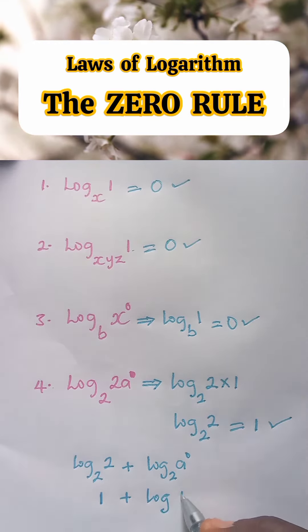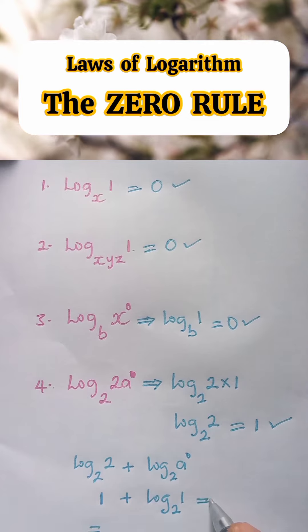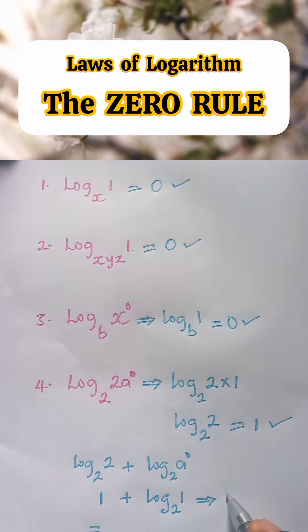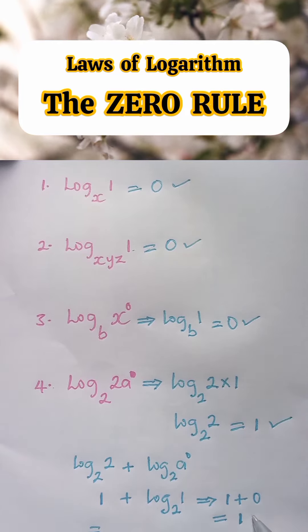A raised to power zero is equal to one base two. And here, log one to base two is equal to zero. So we have one plus log one to base two is zero, and the answer is equal to one.